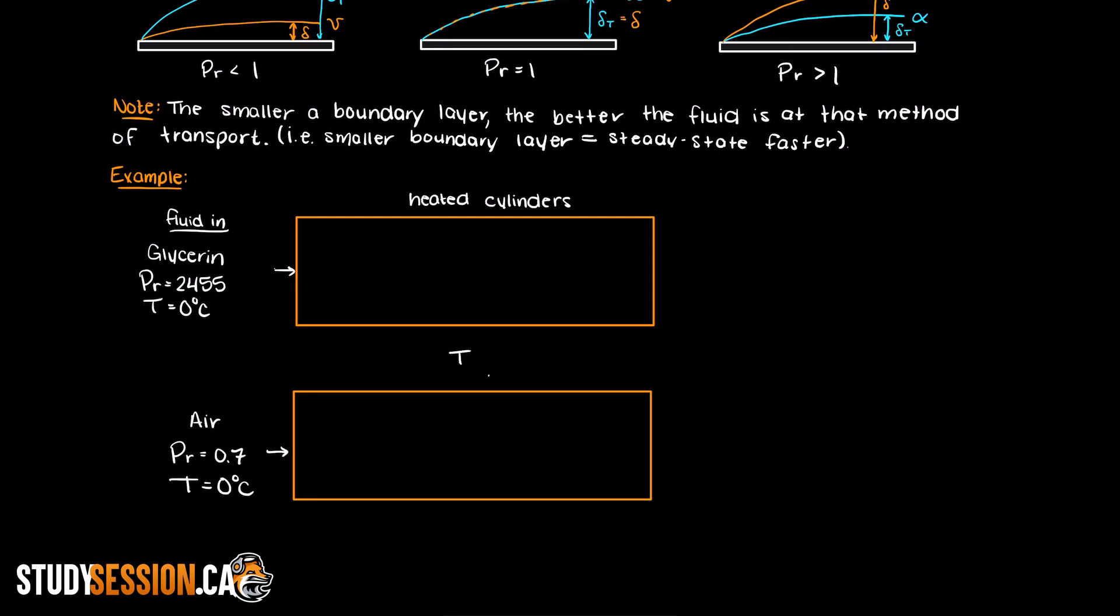And in the second scenario we have air with a Prandtl number of 0.7 through a heated cylinder. Let's say both fluids are entering at 0 degrees and our heated cylinder is at 75 degrees Celsius. Knowing what we just discussed about the Prandtl number, what do you think will happen in both these scenarios?